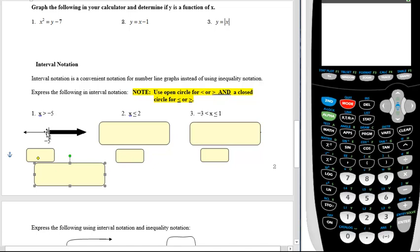You indicate where the shading starts, where it's going or where it stops. So in this one I would start at negative 5 going toward positive infinity and I would have parentheses around those two. That is interval notation.